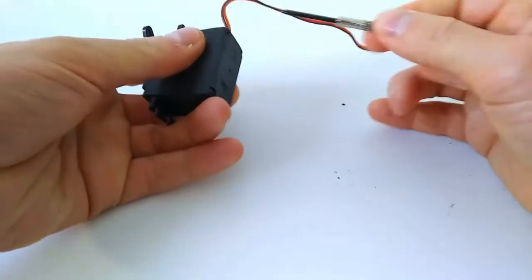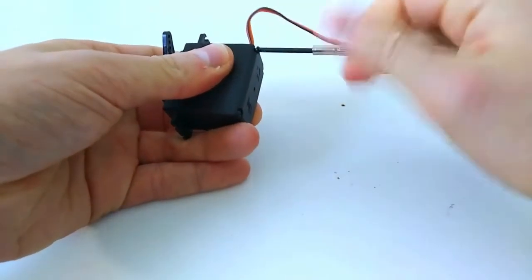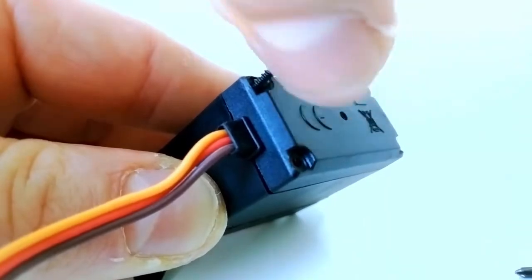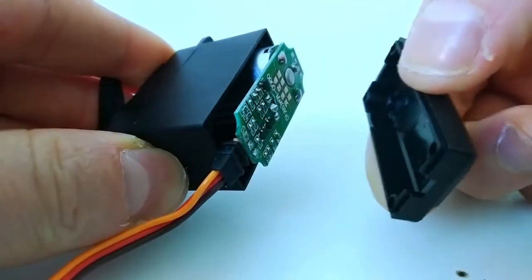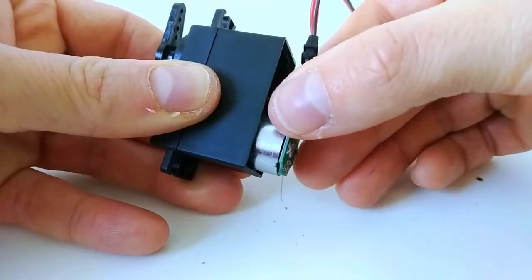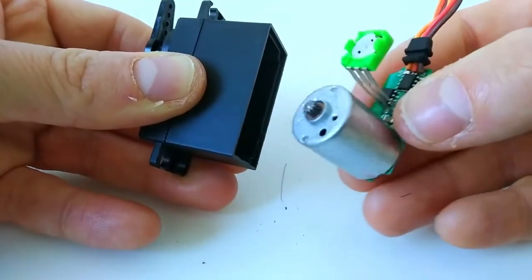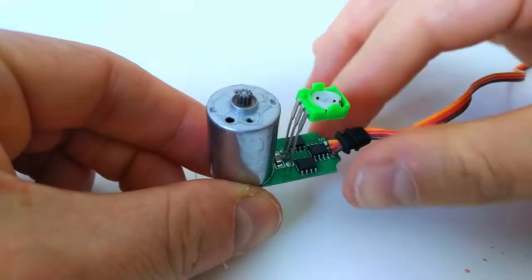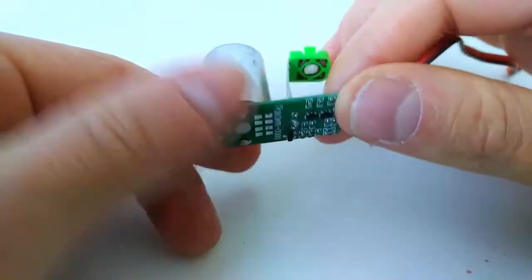If we open the case, it reveals the circuit board. We can take the entire circuit board out. We can see that there's really not that much inside the servo. It mainly consists of a small high-speed DC motor.